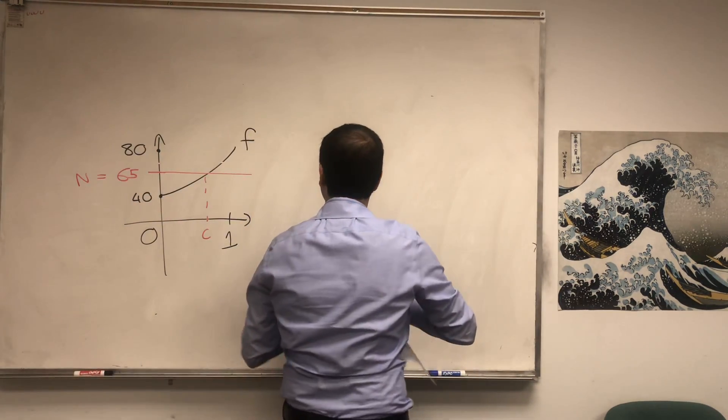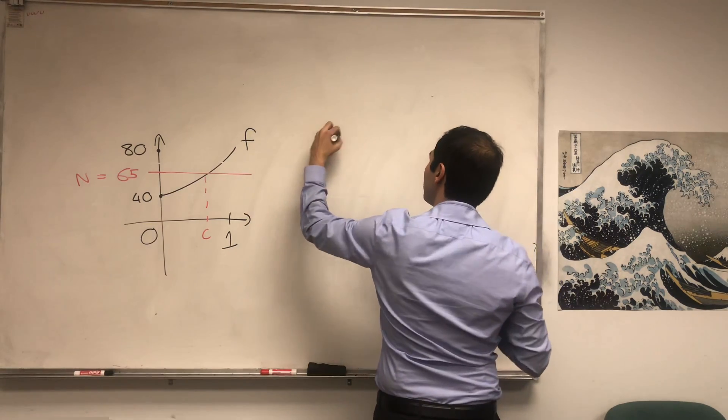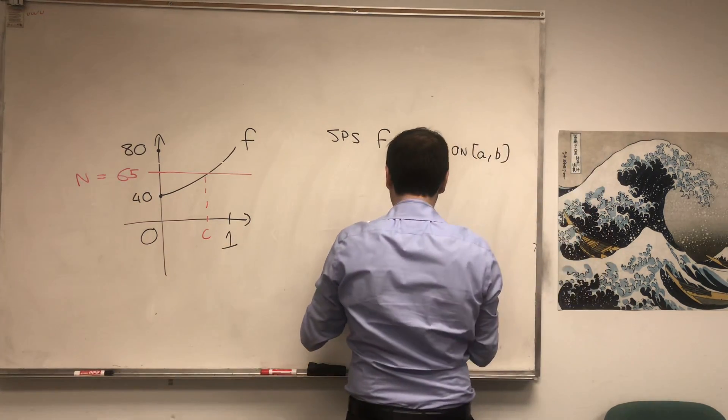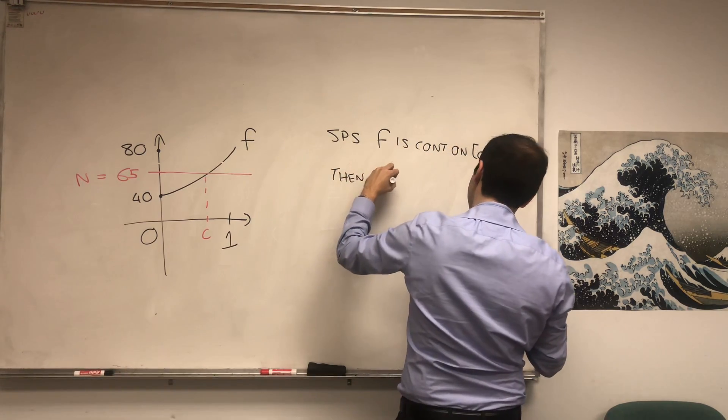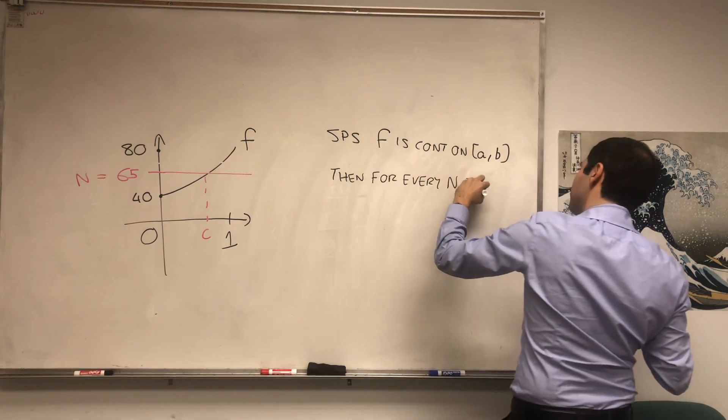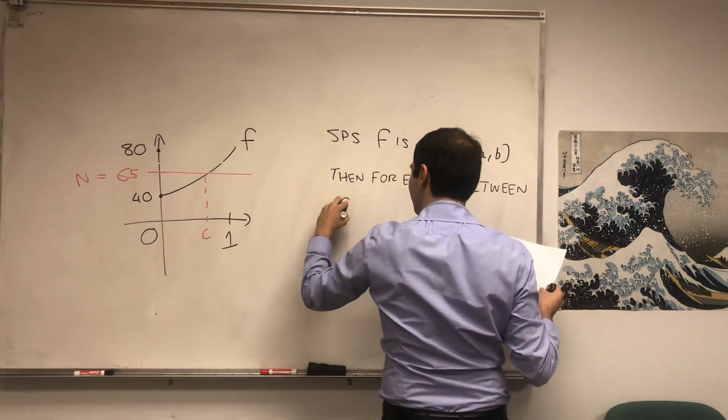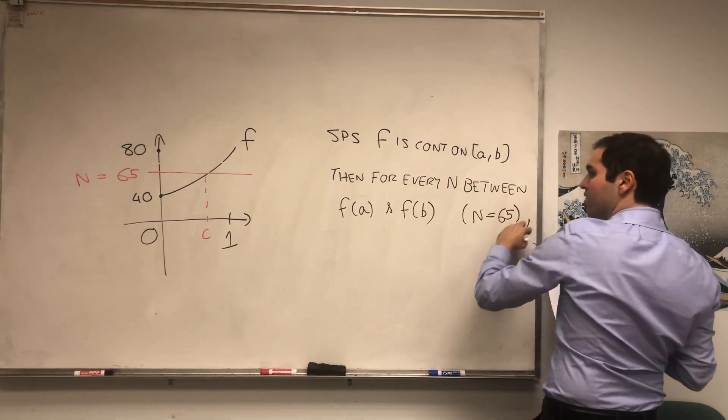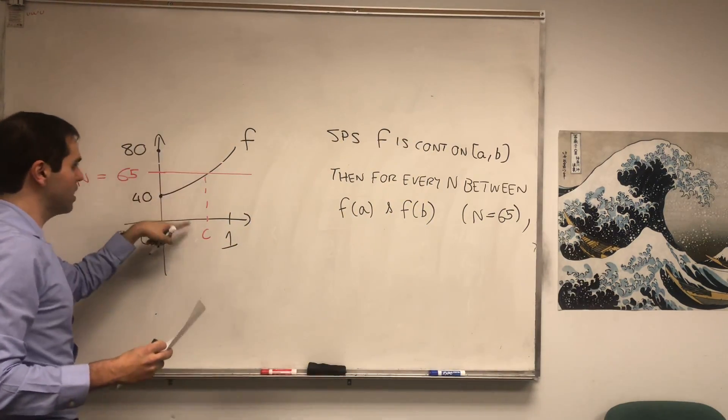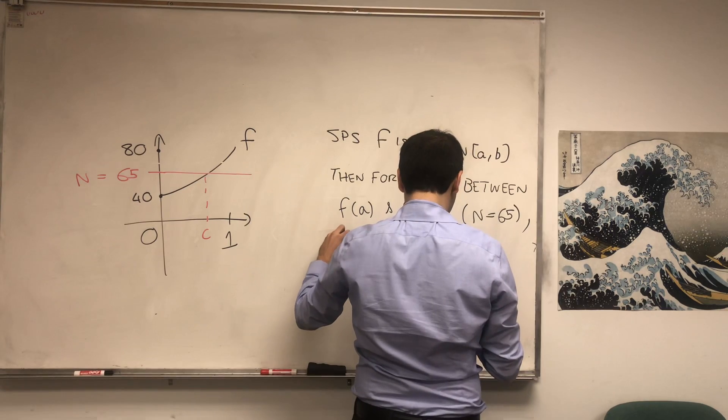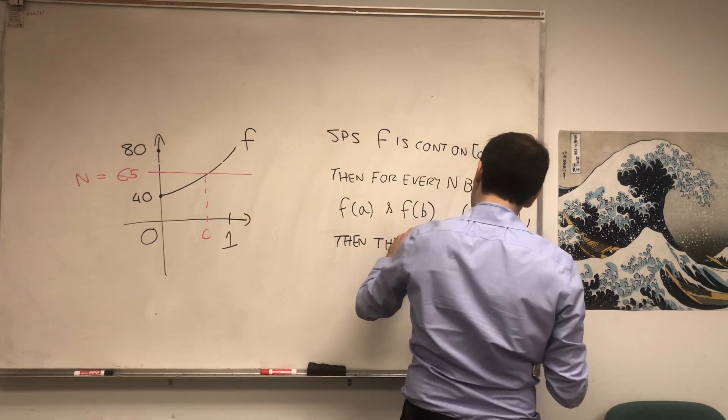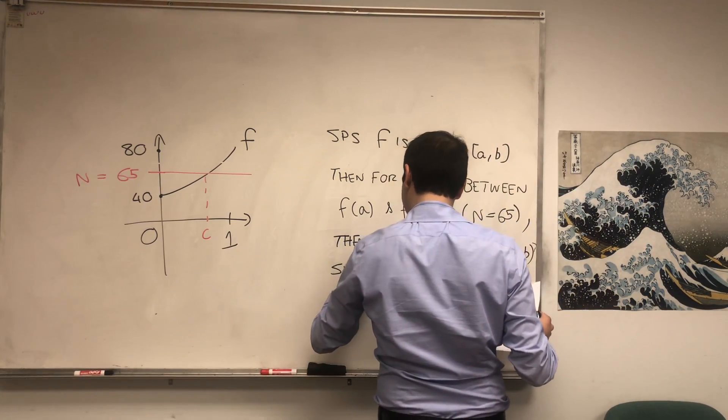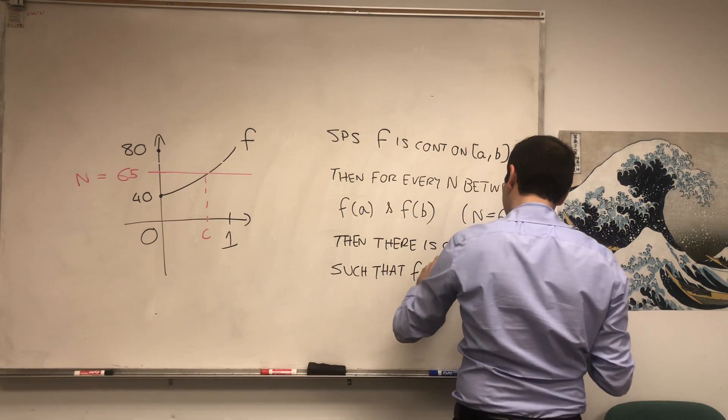So let me just state that with symbols. Suppose f is continuous on [a,b]. Then, for every n between f(a) and f(b), for instance here think n equals 65, there's always some value of c such that f(c) equals 65. So then there is some c in your interval [a,b] such that f(c) equals n.